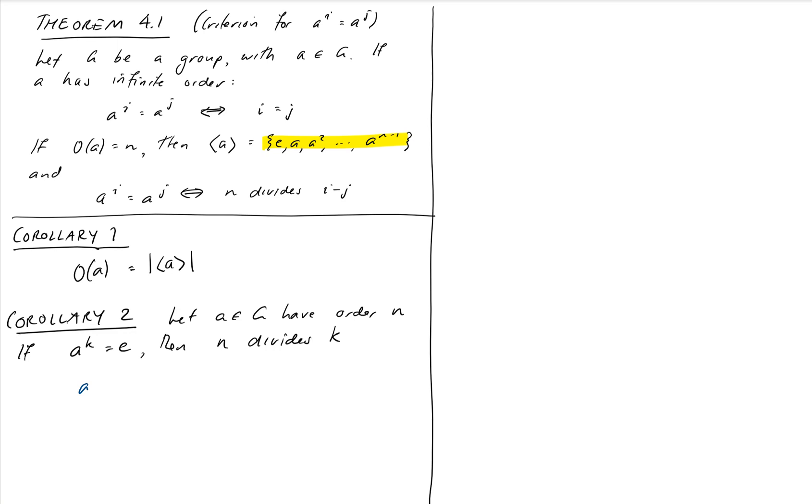Well, we can state it in this way. a to the k equals a to the 0. So I'm using this statement here with k and 0 instead of i and j. This implies n divides k minus 0.